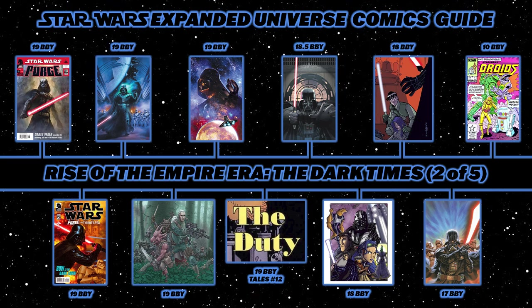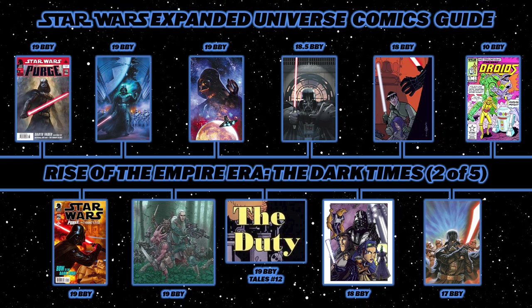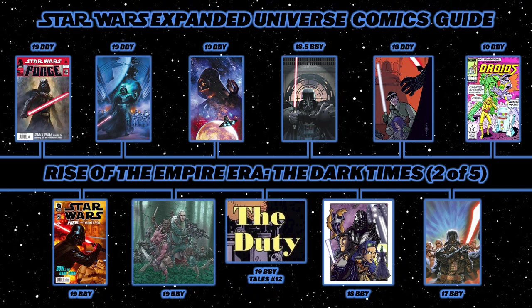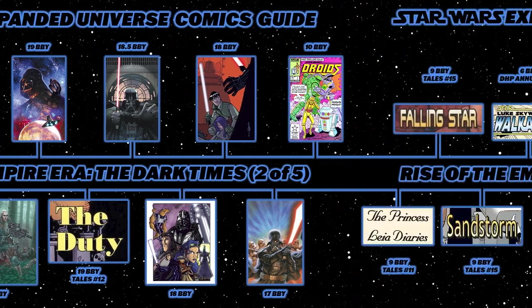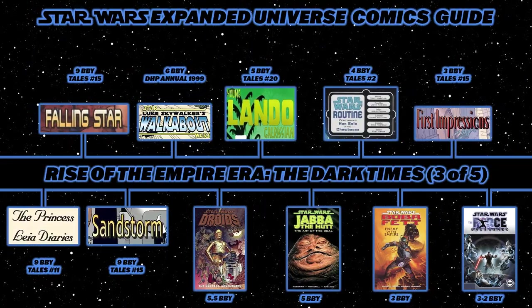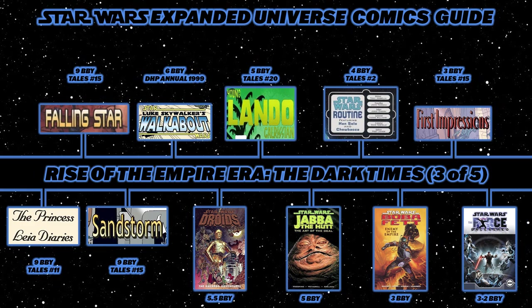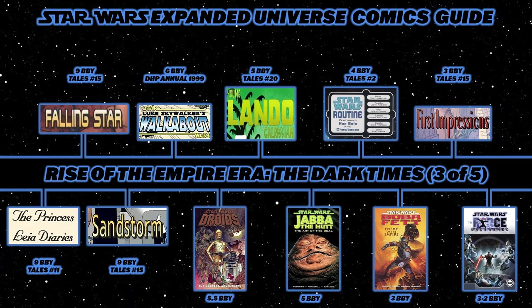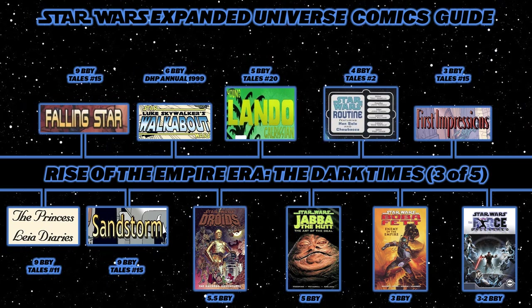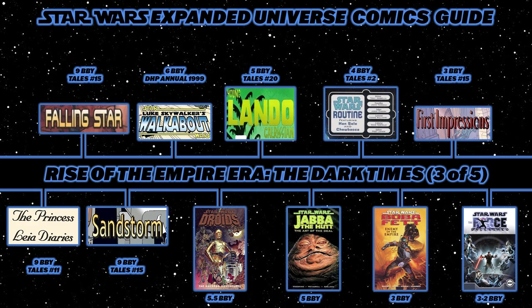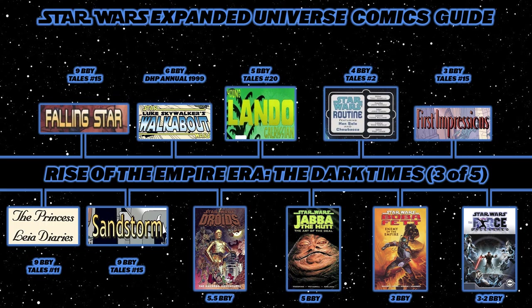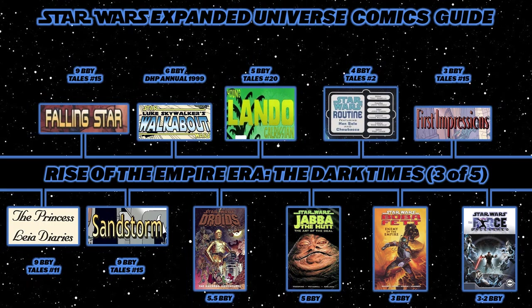Jumping ahead from the post-Revenge of the Sith years, read Droids — an eight-issue comic book series published by Star Comics, an imprint of Marvel, from 1986 to 1987. Then the Star Wars Tales stories: The Princess Leia Diaries from Tales number 11, Falling Star from Tales 15, Sandstorm from Tales 15, and Luke Skywalker's Walkabout from Dark Horse Presents Annual 1999.